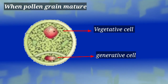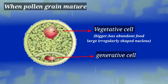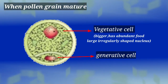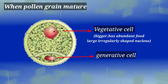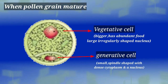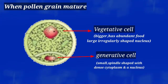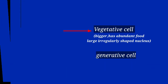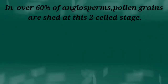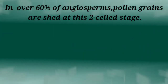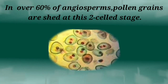The vegetative cell is bigger and has abundant food reserve and a large irregularly shaped nucleus. The generative cell is small, spindle-shaped with dense cytoplasm and nucleus. In over 60% of angiosperms, pollen grains are shed at this two-celled stage.